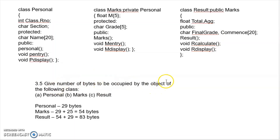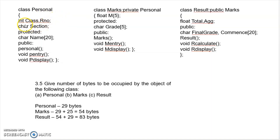Next question: give the number of bytes occupied by the object of the following classes. For the Personal class: it has integer variables (4 bytes each), a character variable section (1 byte), and a string variable name of 20 characters (20 bytes). So the total is 4 plus 4 plus 1 plus 20, which is 29 bytes for the Personal class object.